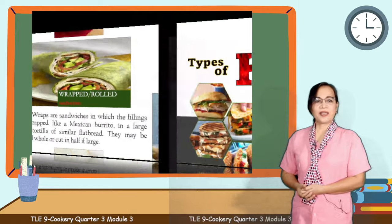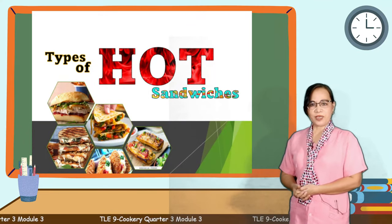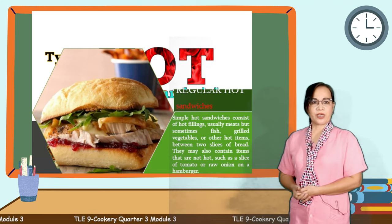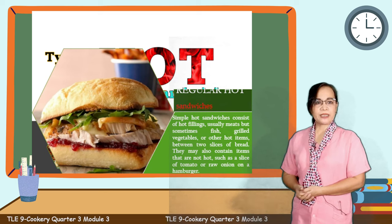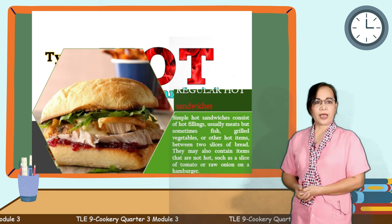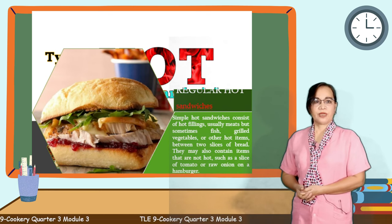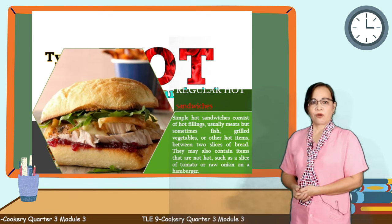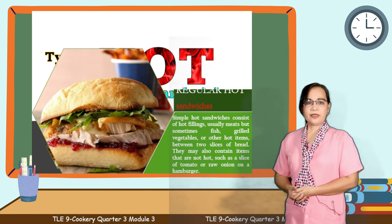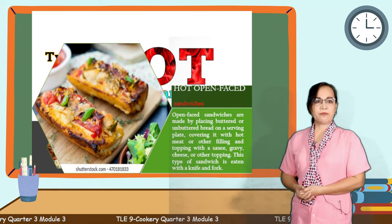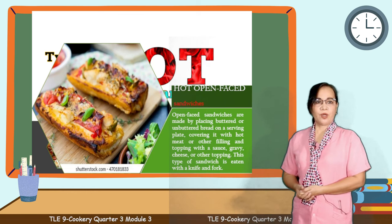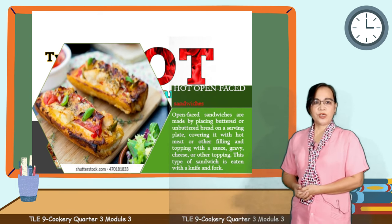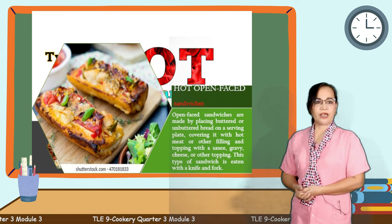Next is hot sandwiches. Here are the different types of hot sandwiches. Number one, regular hot sandwich. Simple hot sandwiches consist of hot fillings, usually meats, but sometimes fish, grilled vegetables, or other hot items between two slices of bread. They may also contain items that are not hot, such as a slice of tomato or raw onion on a hamburger. Next is hot open-faced sandwiches. These are made by placing buttered or unbuttered bread on a serving plate, covering it with hot meat or other filling, and topping with a sauce, gravy, cheese, or other topping. This type of sandwich is eaten with a knife and fork.